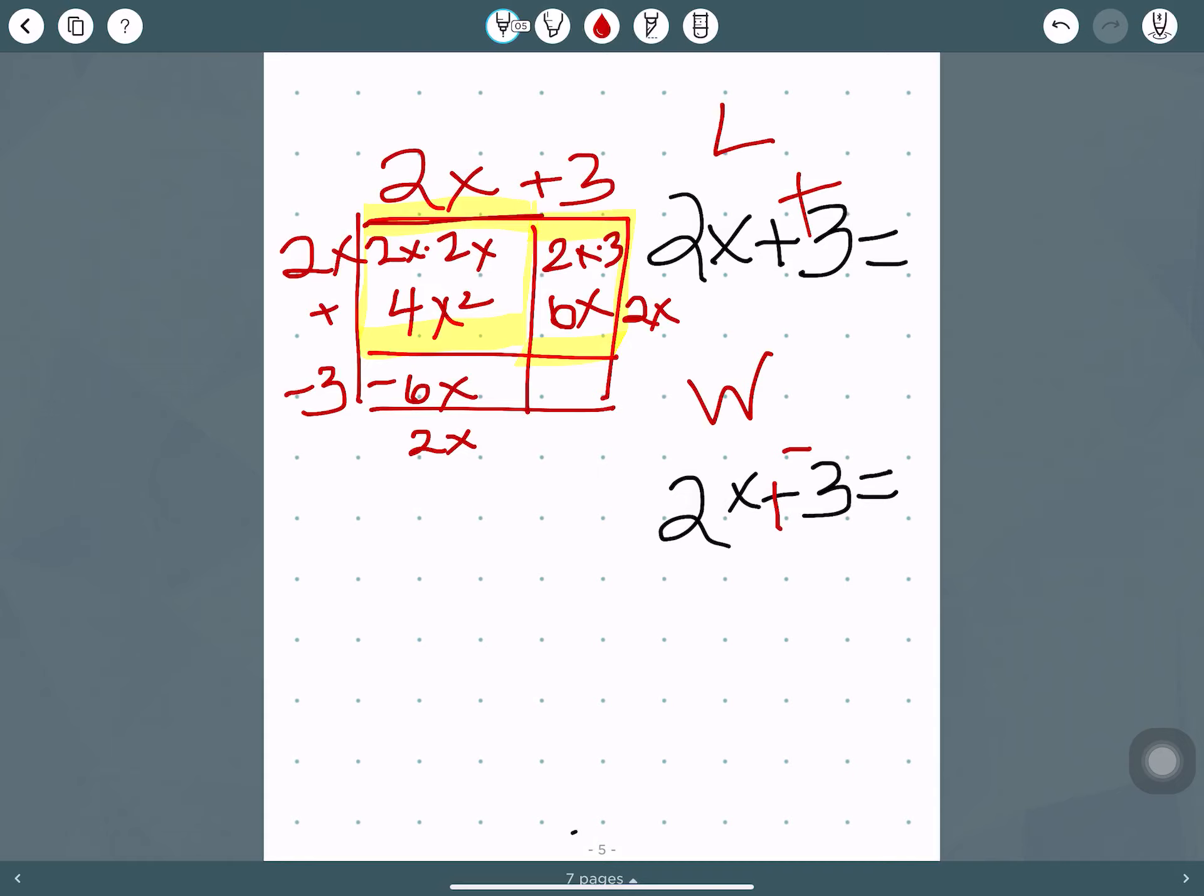And then our smaller rectangle, 3, length and width of 3, and negative 3. So that's negative 9. So all together, we have 4x squared plus 6x minus 6x minus 9.